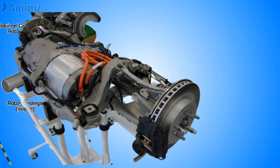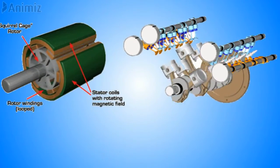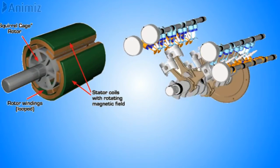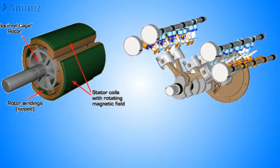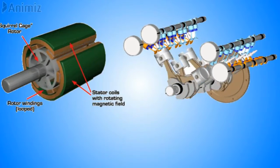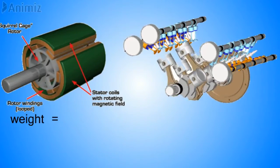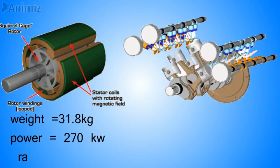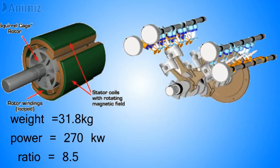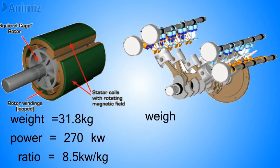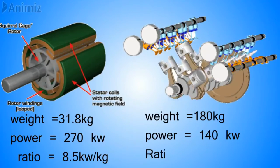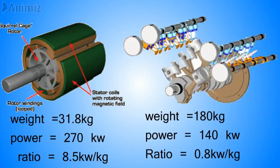The frequency of the motor is very controllable. You can control the power and speed. With IC engines, you can control high-speed and low-speed through the air-fuel mixture. In the comparison chart, the electric motor weight is 31.8 kg with a power production of 290 kW, giving a weight-to-power ratio of 8.5 kW per kg. The IC engine produces 180 kW with a weight-to-power ratio of 0.8 kW per kg.